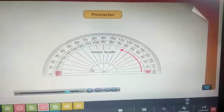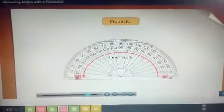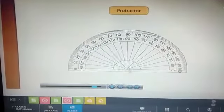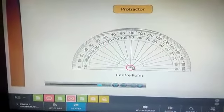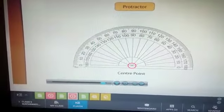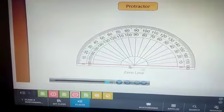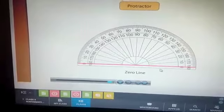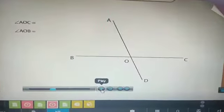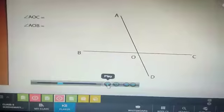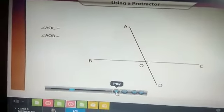This point is the center point, and this straight line is the zero line. We have to be very careful when we use a protractor for measuring.